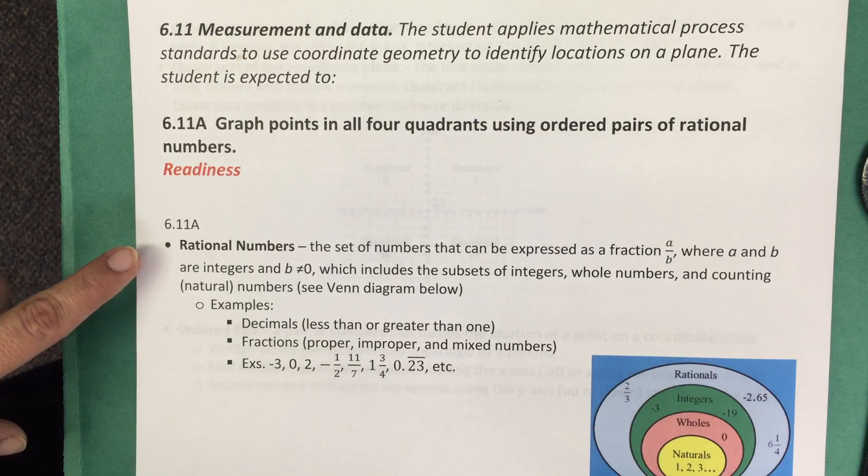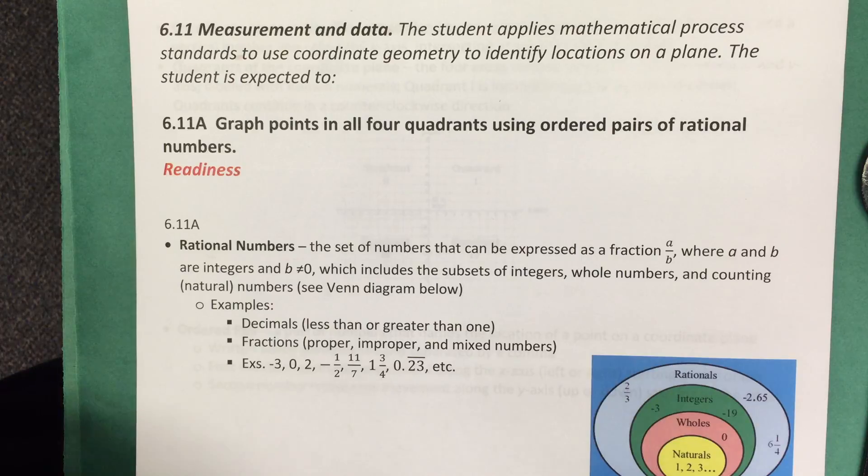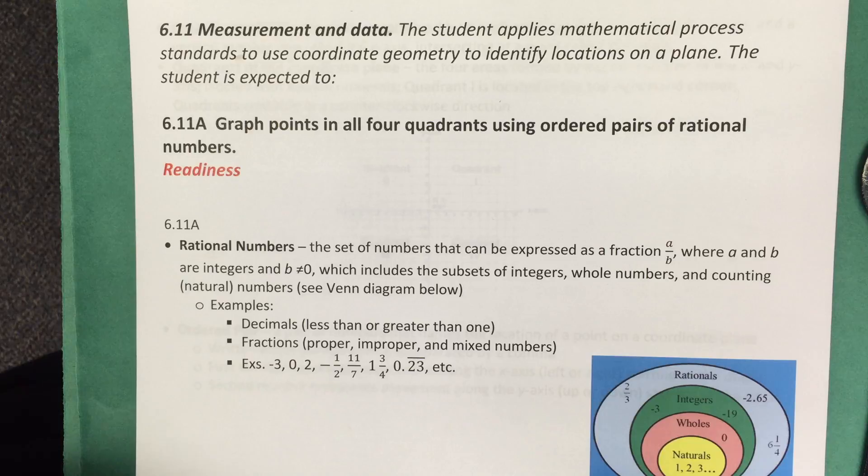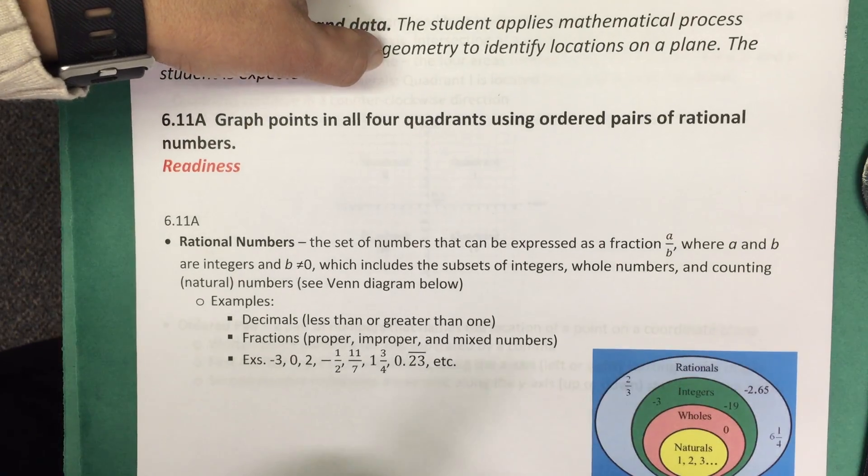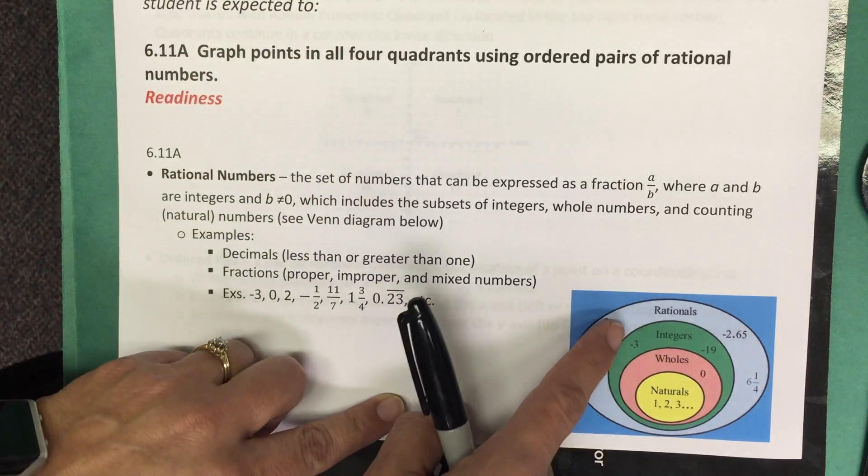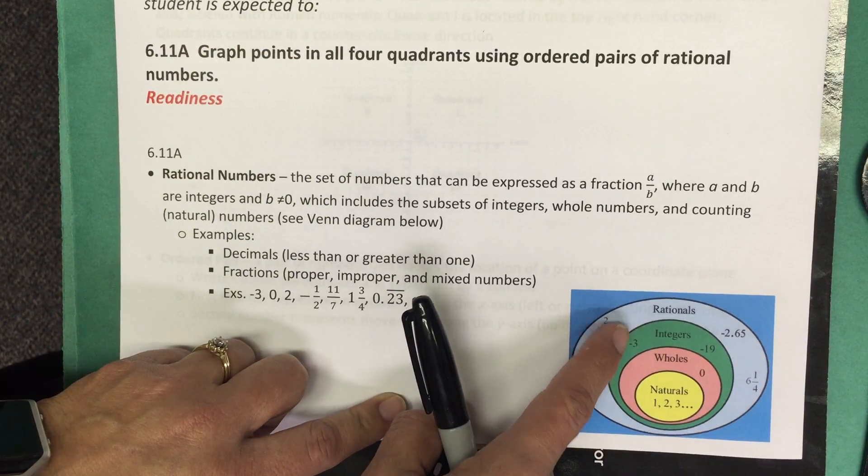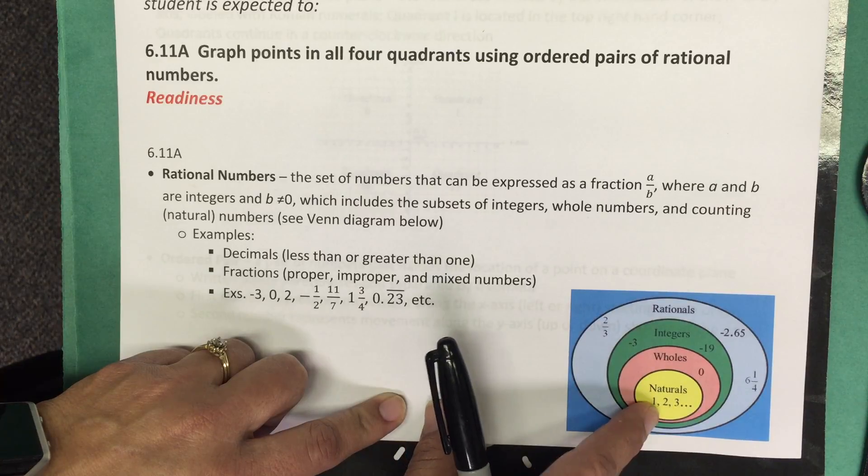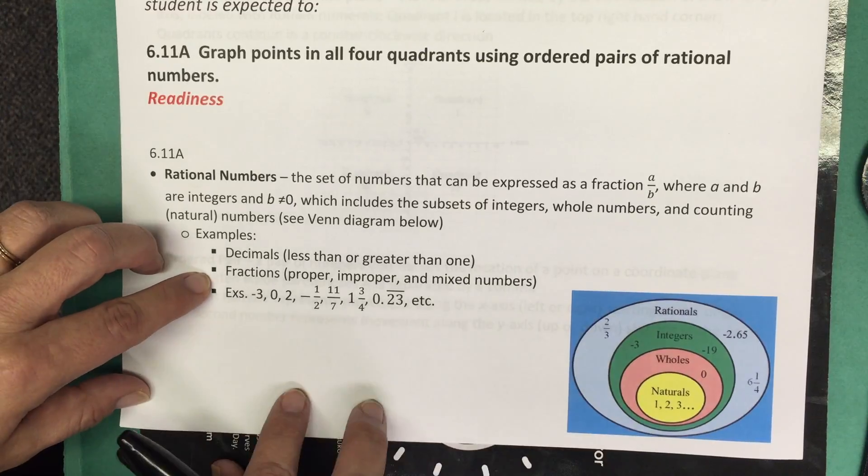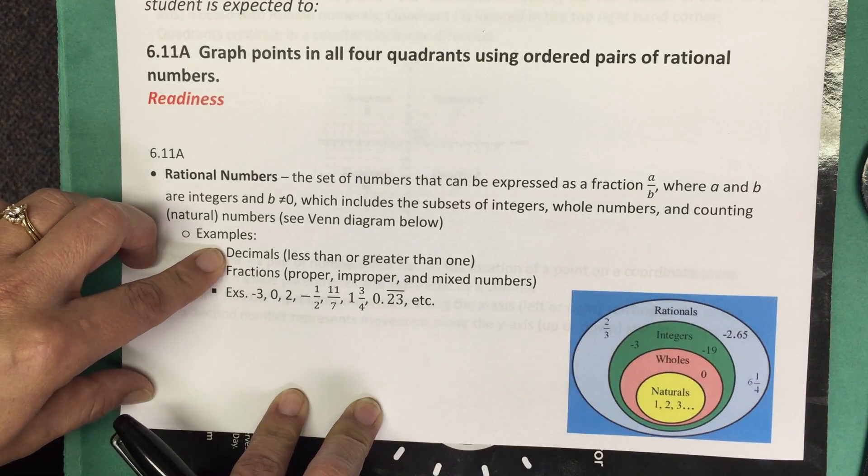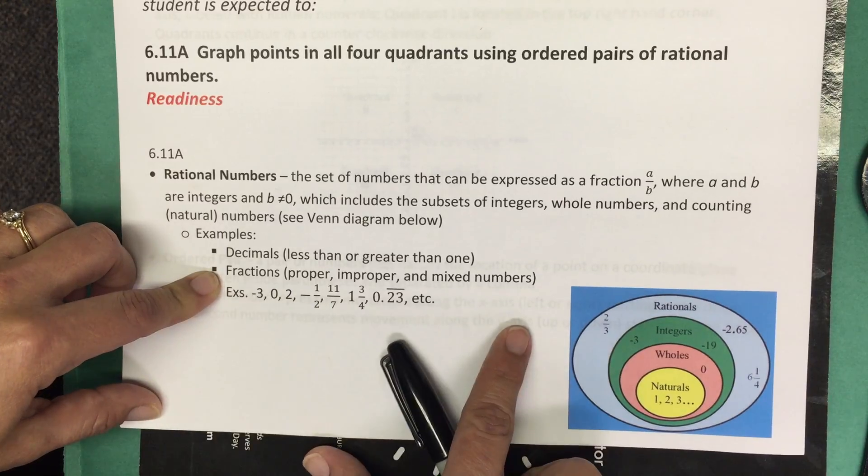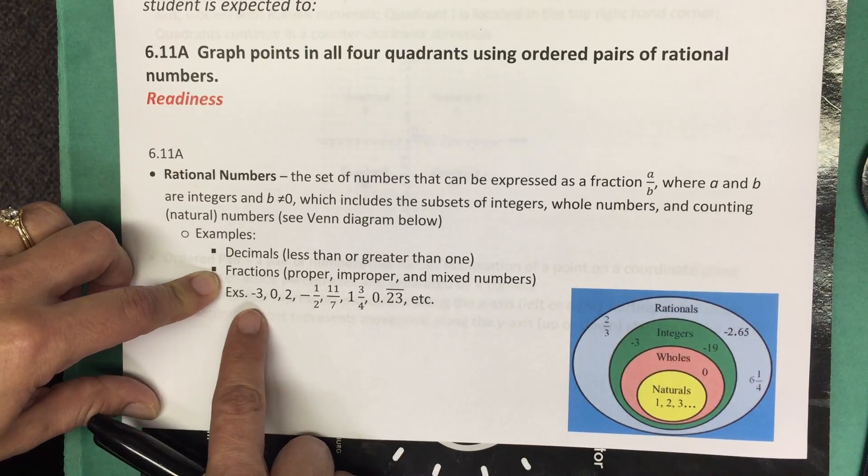First let's look at the definition for a rational number. Rational numbers are the set of numbers that can be expressed as a fraction a over b, where a and b are integers and b does not equal zero. If we look at this graphic here we can see that rational numbers includes integers, whole numbers, and natural numbers. So all of these sets of numbers fall within rational numbers. Some examples: we can use decimals that are less than or greater than one, fractions that are both proper, improper, and mixed, and then of course we can use negative numbers, whole numbers, repeating decimals—all of those count as rational numbers.